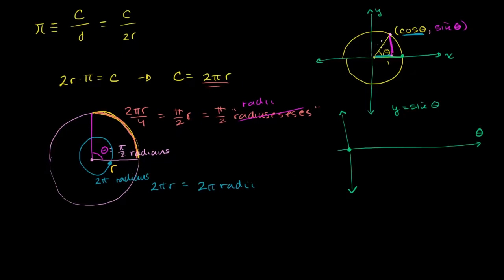If we make the angle go 90 degrees, or pi over 2 radians, what is sine of theta? Well now it is 1. This is a unit circle with radius 1. So when theta is equal to pi over 2, sine of theta is equal to 1.